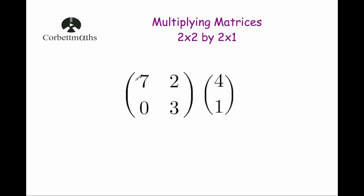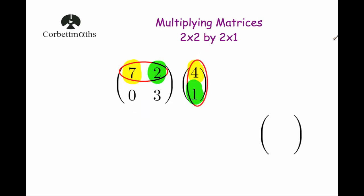To do that, what we do is we multiply the first row — the 7 and the 2 — by the 4 and the 1, and then we multiply the second row — the 0 and the 3 — by the 4 and the 1. Now, whenever I show you this, it can be quite confusing to begin with, but we're going to look at three different examples, and by the end it should be quite straightforward.